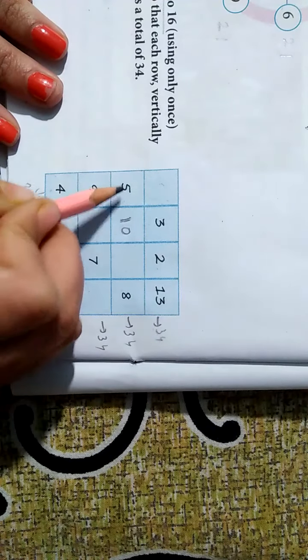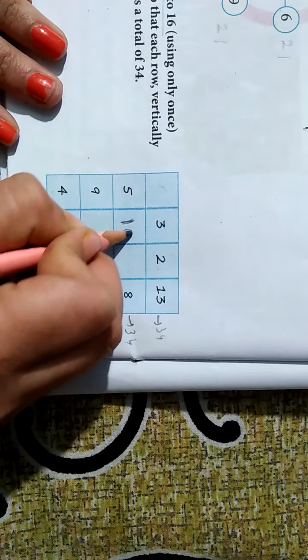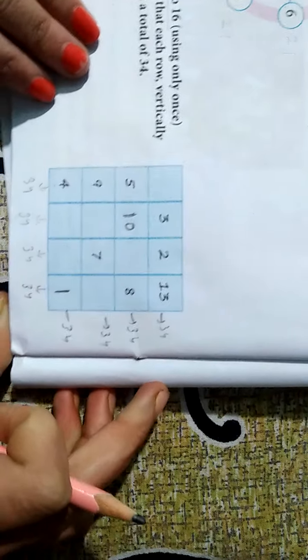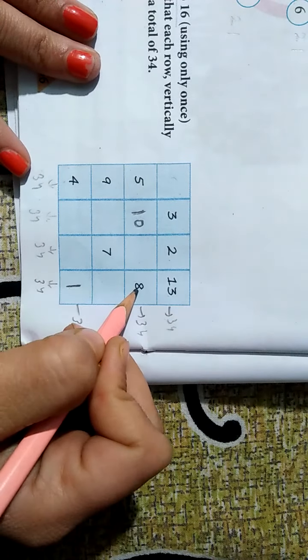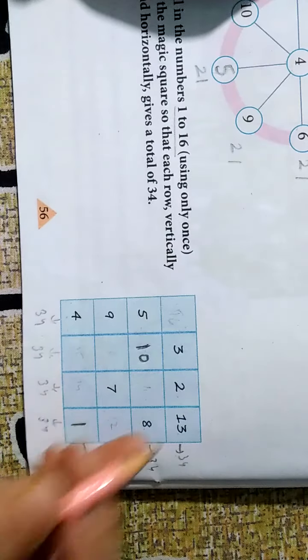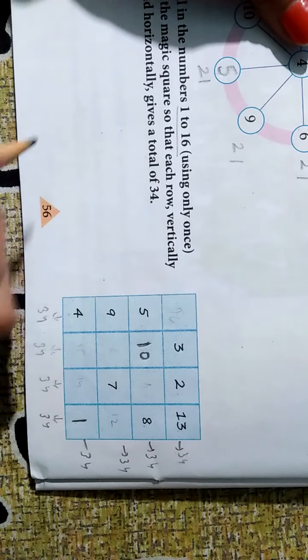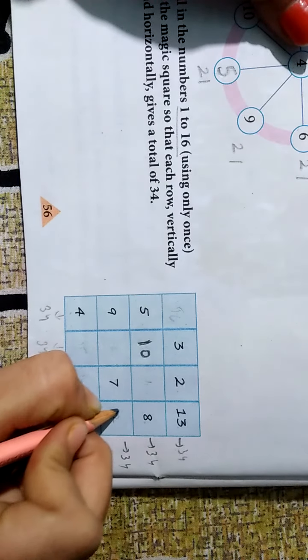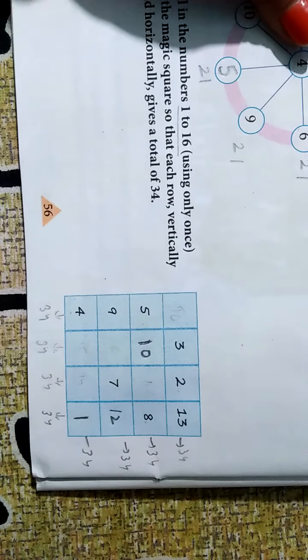Ab yahan pe dekhiye. Five hai. Ye nine iske close hai. Five ka double ten. Bas ye do number aapne learn karna hai. Baki aap se aap fill ho jayenge. Thirteen plus one, fourteen. Fourteen plus eight kitna hota hai? 22. Ab yahan pe 34 hai total. To 34 minus 22 kitna hoga? Twelve. Twelve ho gaya.